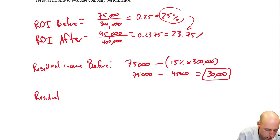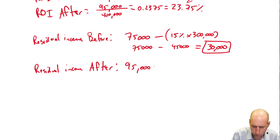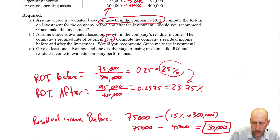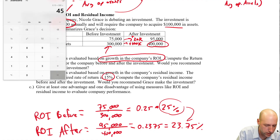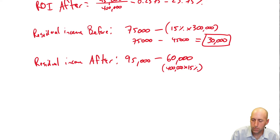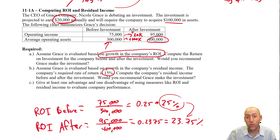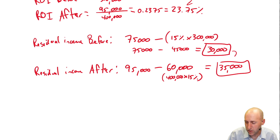Residual income after: $95,000 minus (15% × $400,000). That's $95,000 minus $60,000, giving residual income after of $35,000. This produced a higher residual income, so we would say: Nicole Grace, you should make this investment. It gives you higher residual income and presumably a bigger bonus — or if it's your own company, you're simply making more money.